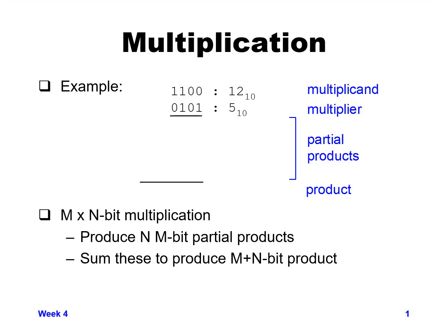The last function we're going to look at this week is multiplication. Let's start with an example. We have a multiplicand and a multiplier that are each four-bit numbers. The multiplicand is 1100, which is 12 in base 10, and the multiplier is 0101, which is 5 in base 10.